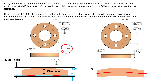In this new example, flatness is applied directly to the size dimension, and therefore we're controlling the central element, which is a derived median plane. The derived median plane must be between two parallel planes spaced apart five thousandths. We can see the difference in interpretation between flatness applied to a surface which just happens to be part of a feature of size, versus directly applying flatness to a feature of size. In the scenario on the right, Rule #1 is being overridden.